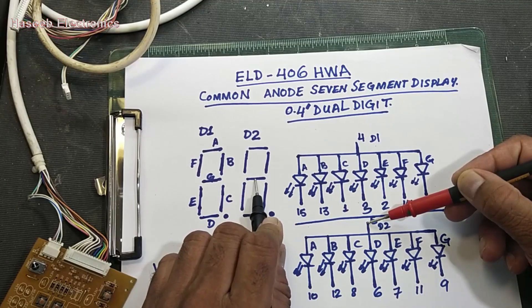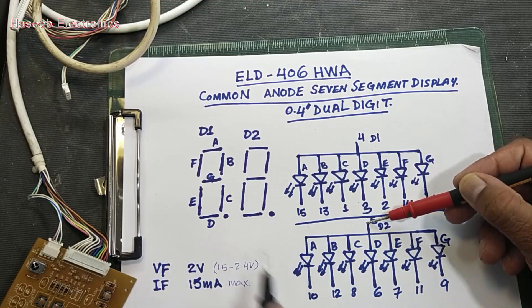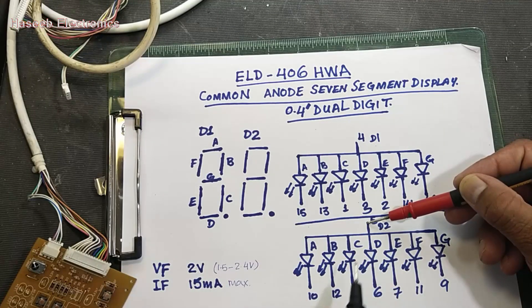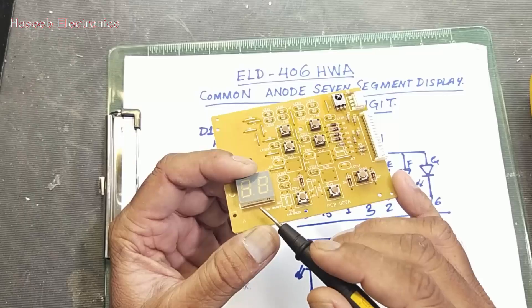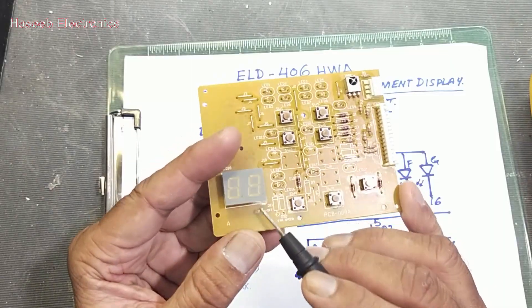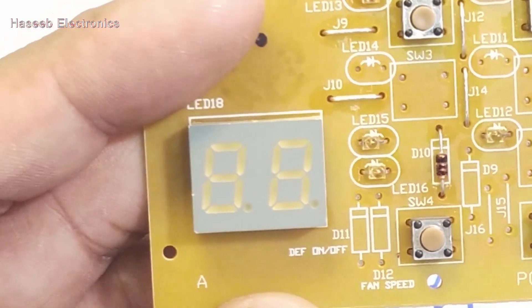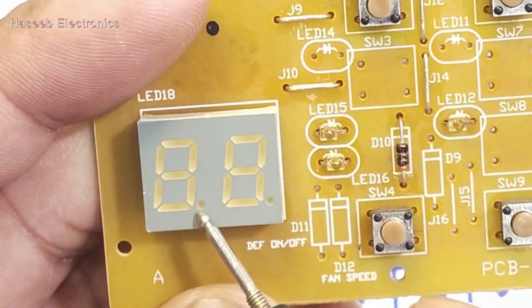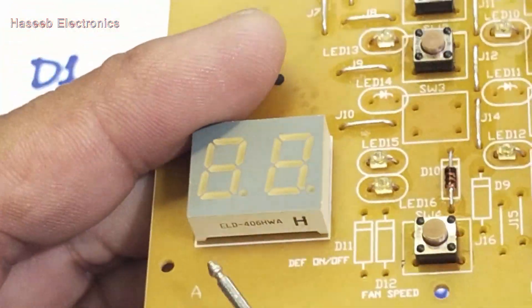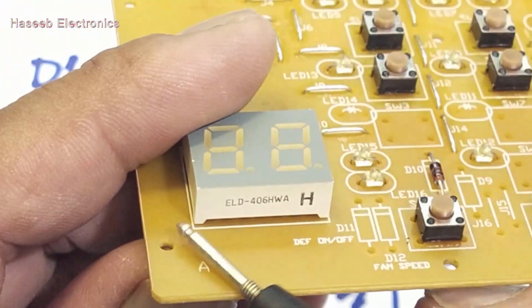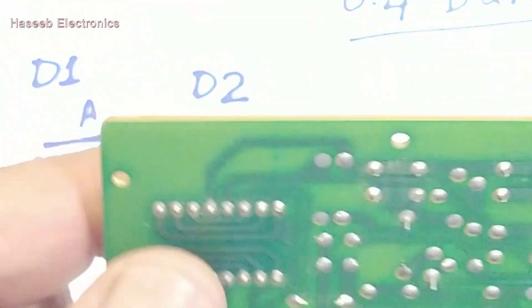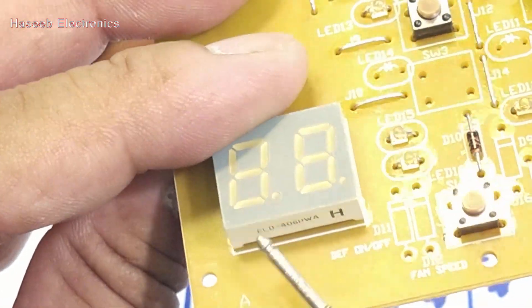And if you connect between 5 and 10, this will turn on. To test this seven segment display, how can we find where is the pin number? These dots must be in this position, so here is pin number 1, the first pin, exactly under this segment.